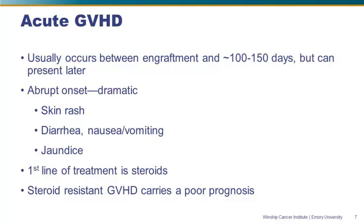Acute graft-versus-host disease is the syndrome that occurs early after transplant, usually in the first 100 to 150 days, though it can present later. This is the kind of GVHD where the patient can typically say the exact day it started — I woke up on Monday and had a skin rash, or I started having diarrhea, or my eyes were yellow. The first line of treatment is corticosteroid therapy. Patients who don't respond to steroids or can't be tapered off them have a distinctly less favorable prognosis than those who get steroids and taper off rather quickly.